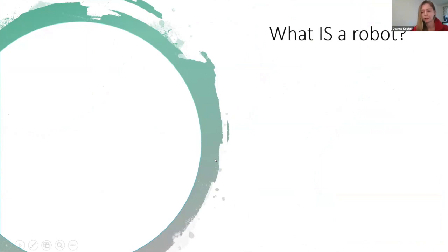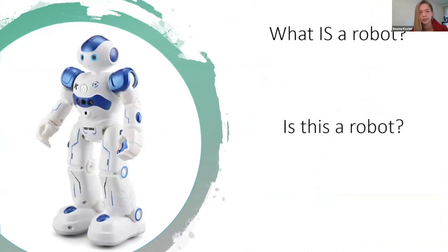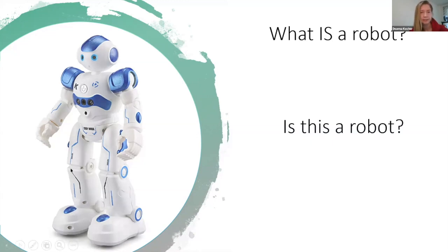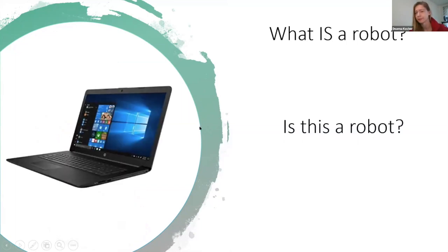What is a robot? Here's our first test. Is this a robot? Go ahead and pull up your Q&A and let me know what you think. Mostly yeses — yes, this is a robot. This is probably the most common example of what we think of when we think of robots. This is a robot that usually plays with kids. Now let's try another one — what about a laptop? Is a laptop a robot?